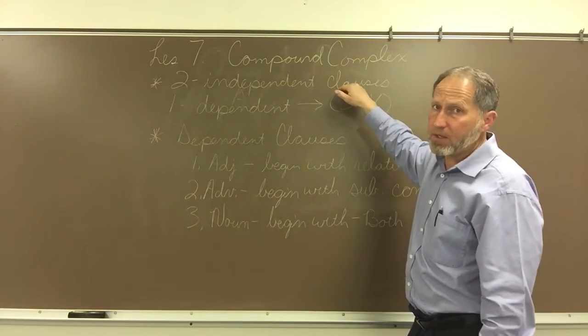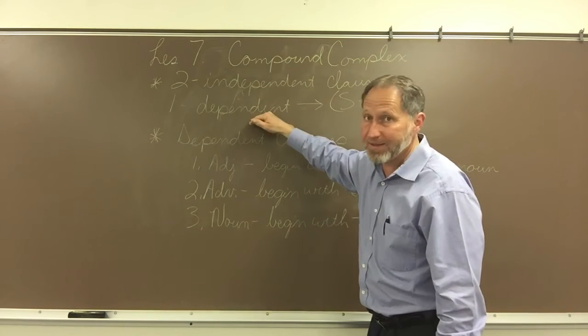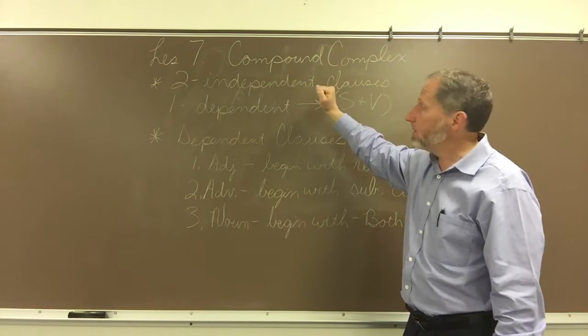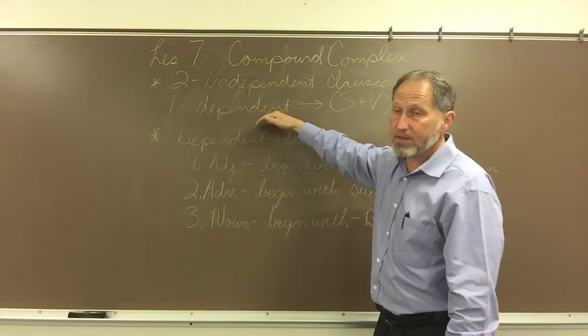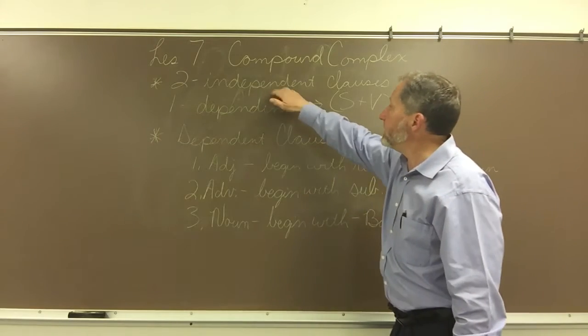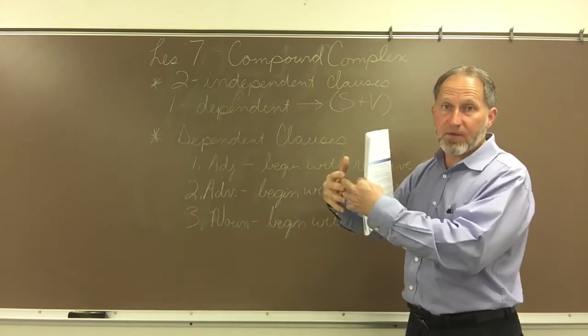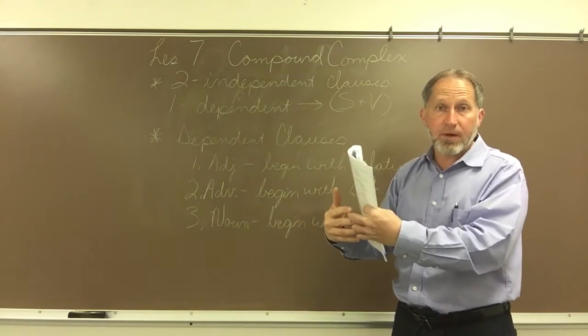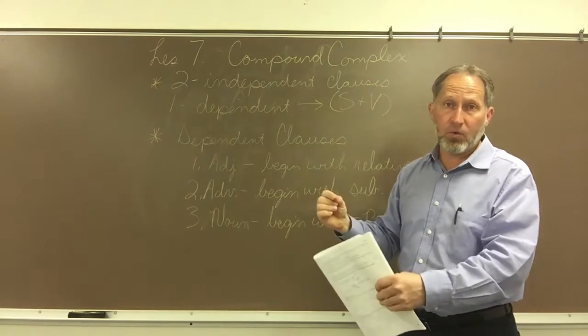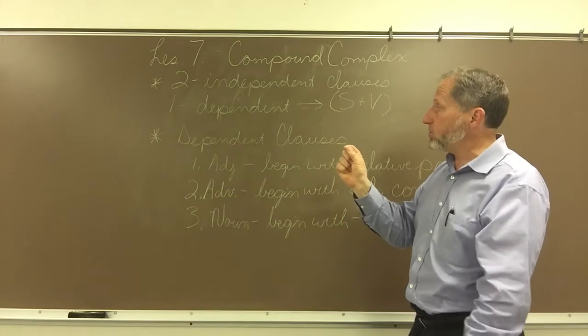When you have two independent clauses you have a compound sentence. If one or more of those independent clauses have a dependent clause within it, then you call it compound complex. It can have more than one, but at least have at least one.